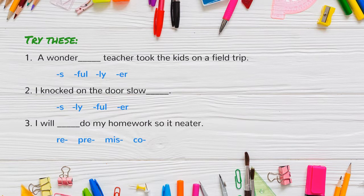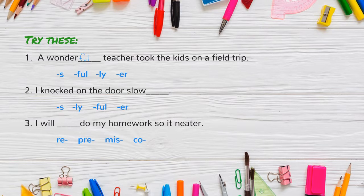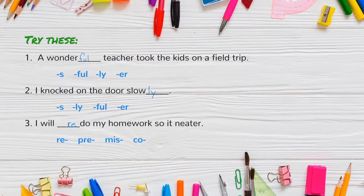Okay, let's get some practice. All you need to do is for each root word provided, figure out which affix fits into the blank. Remember, it could be a prefix or a suffix. Let's see how we have done. Number one: a wonderful teacher took the kids on a field trip — we inserted the suffix ful to the end of the root word. Number two: I knocked on the door slowly — we attached the suffix ly to the root word slow. And three: I will redo my homework so it is neater — we attached the prefix re to the root word do.